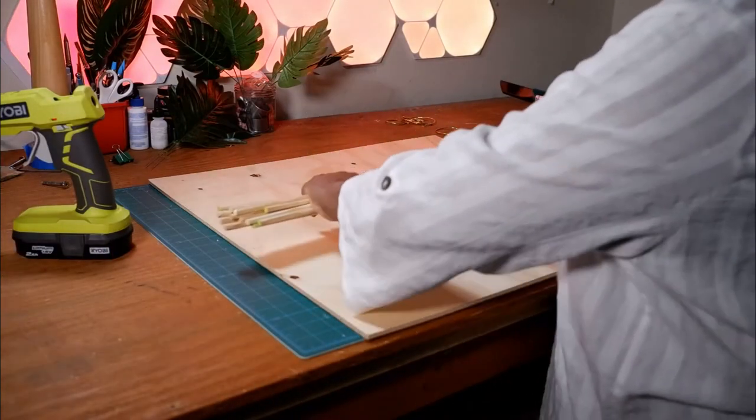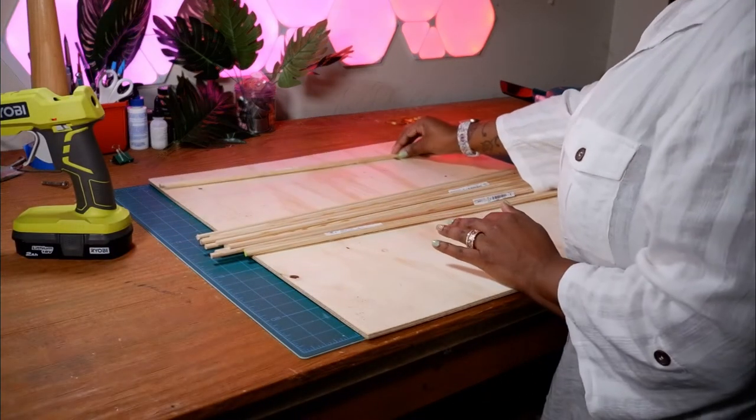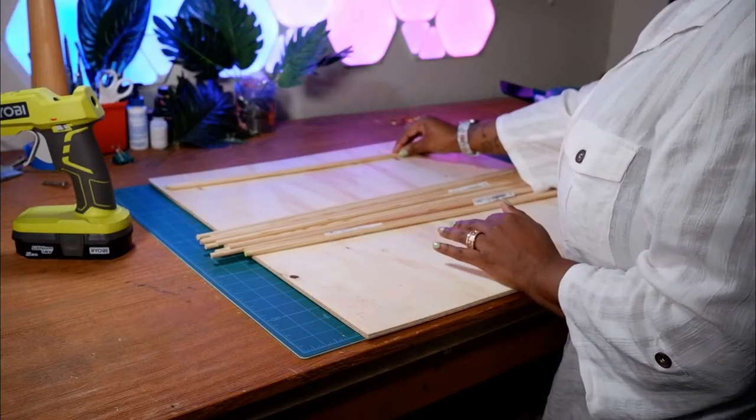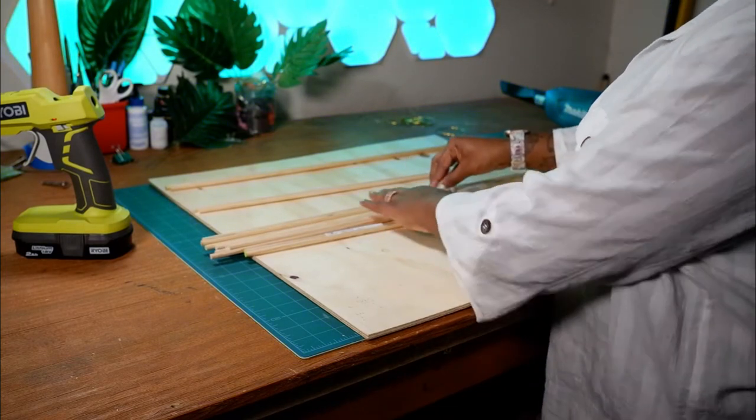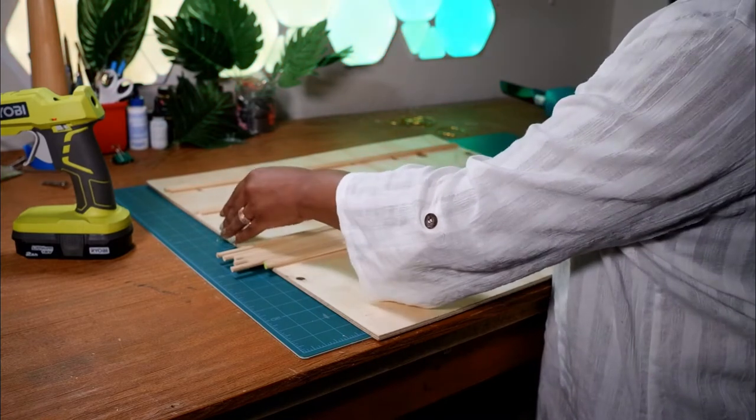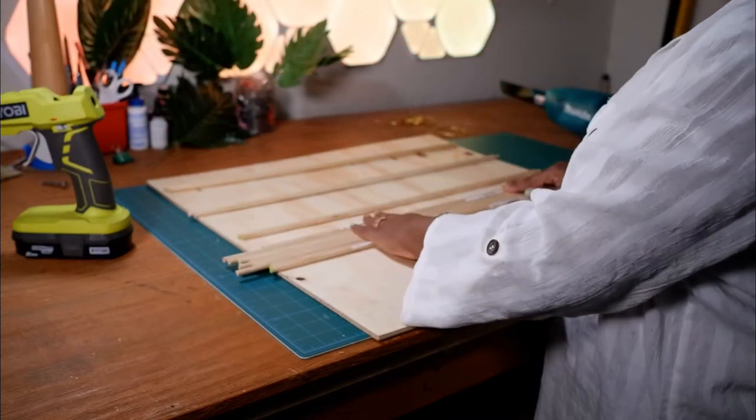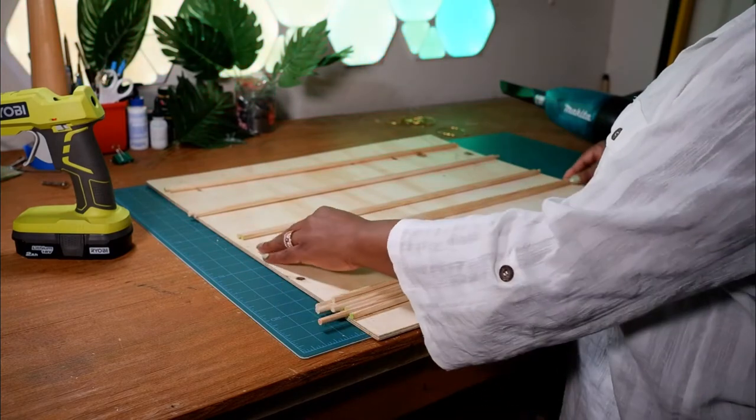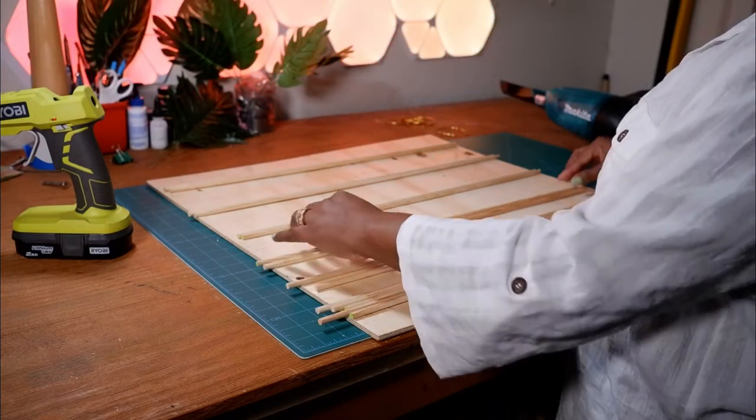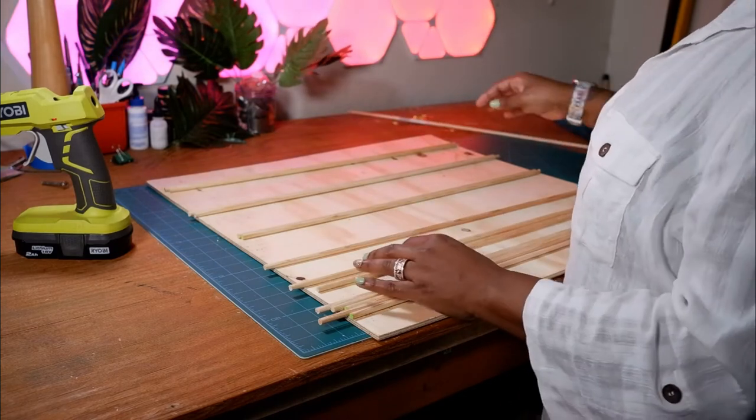Next, I'm going to plan out where I want my dowel pieces to be. And I'm placing them, if you notice, two by two on the board. The reason why I'm doing that is when we glue these two by two pieces of dowel onto the board, the two by two will create a little space in between them where your earring cards will sit in very snugly.